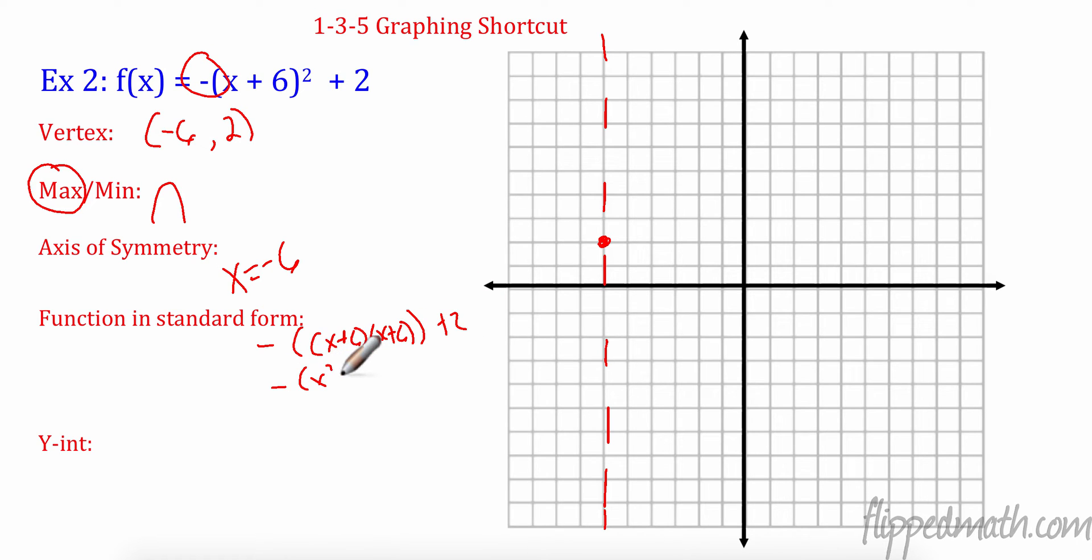We can multiply this out. And that's going to give us, now we have to distribute this negative. So negative X squared minus 12X minus 36, which will be Y equals negative X squared minus 12X minus 34. Sorry about that. All right. And that means our Y value when X is 0, 0, 0, negative 34. Now we can't graph that one, but if we could, if it was on the graph, it'd be good to graph.